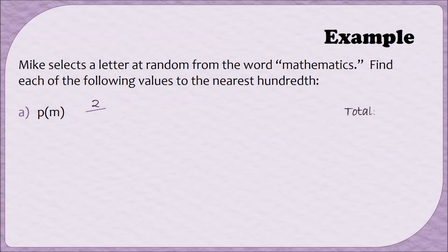So there are a total of eleven letters in the word mathematics, and that will be our denominator. We were also asked to find each value to the nearest hundredth, so we divide the numerator by the denominator to get a decimal value. When I carried out the division, I got 0.18 repeating, which rounded is 0.18.